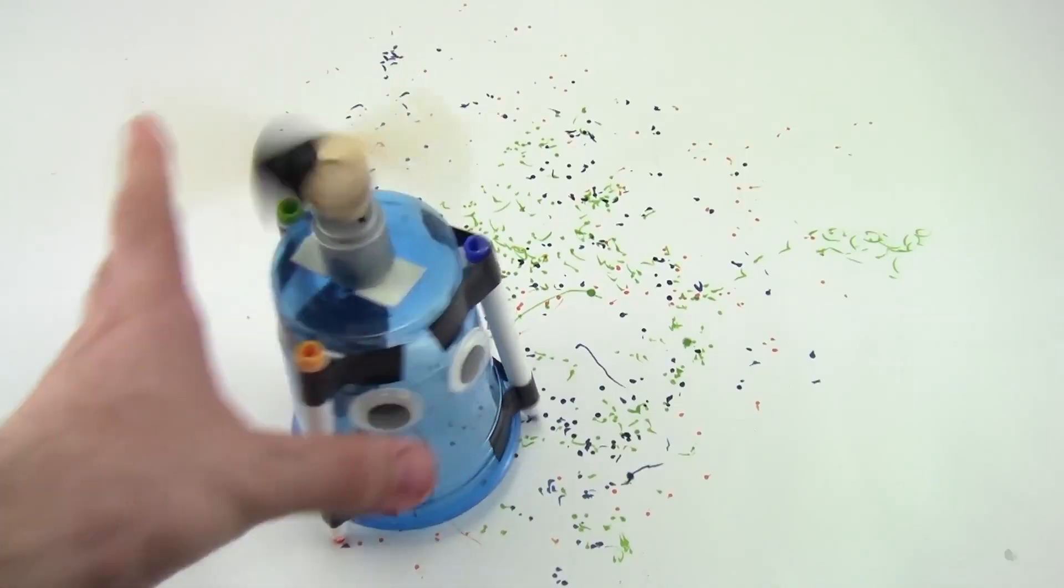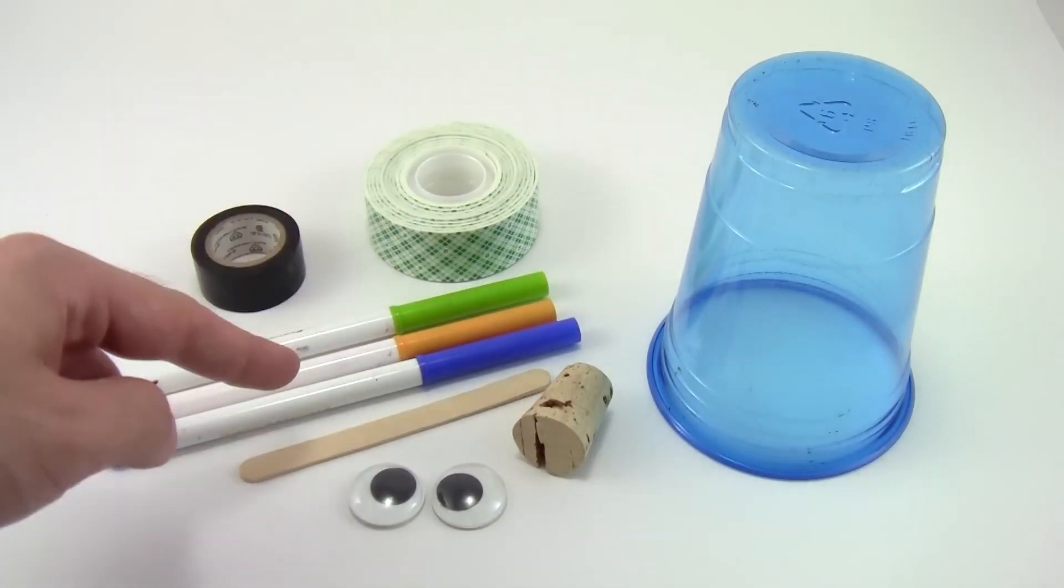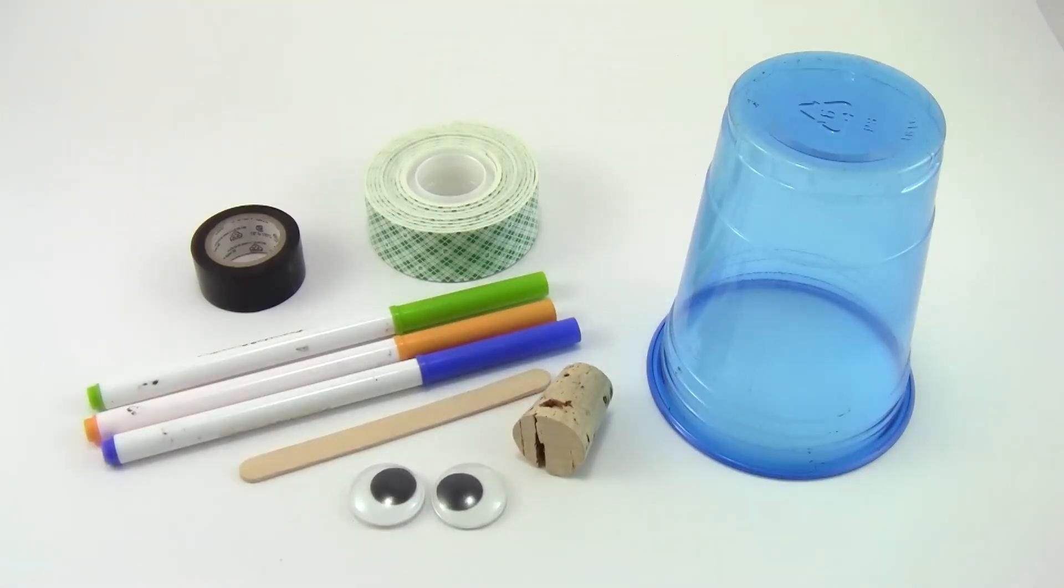Number two: ArtBot. The second project is an ArtBot which is a robot that can draw or paint. You can make an ArtBot from a plastic cup, a battery pack, three markers and a vibrating motor.